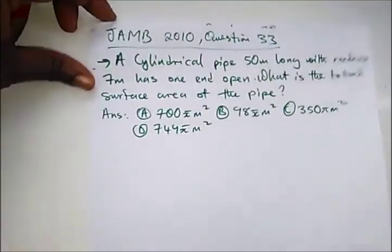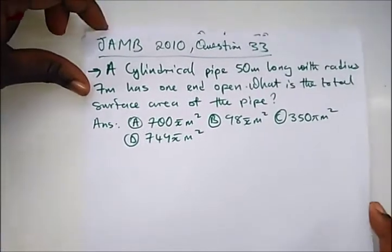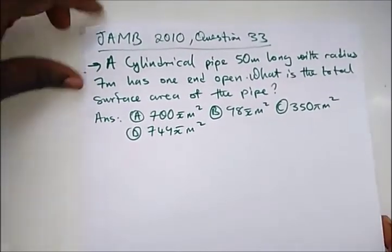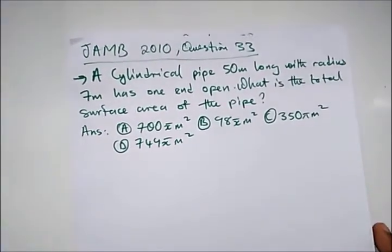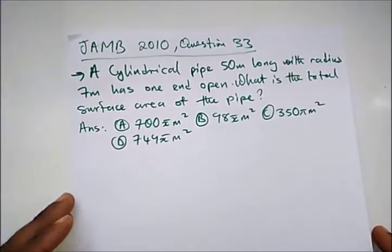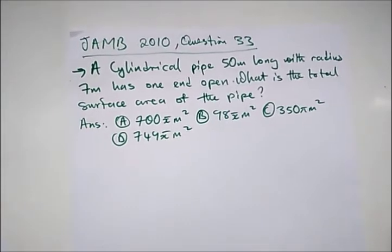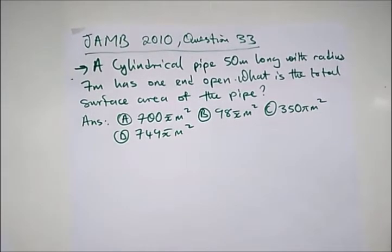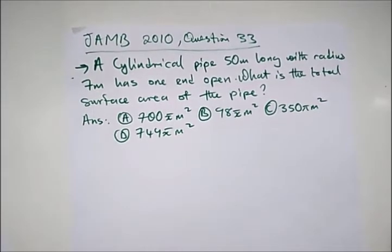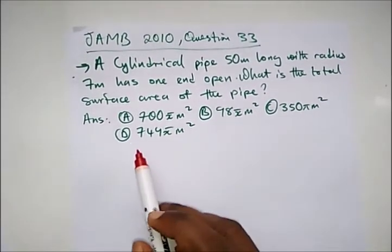Now from JAMB 2010 question 33, it says: a cylindrical pipe 5 meters long — that's the height — with a radius of 7 meters.